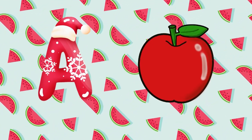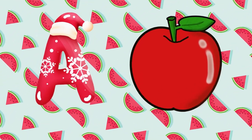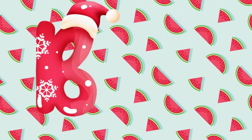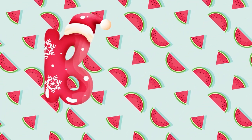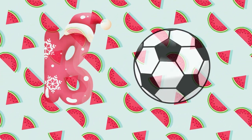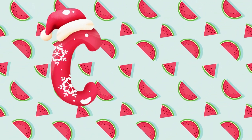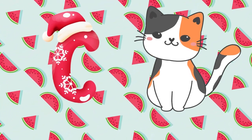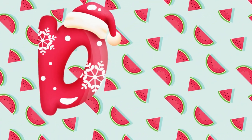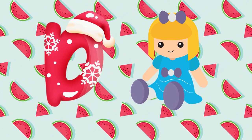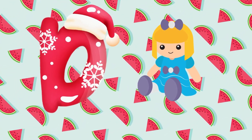A is for apple, a-a-apple. B is for ball, b-b-ball. Z is for cat, c-c-cat. D is for doll, d-d-doll.